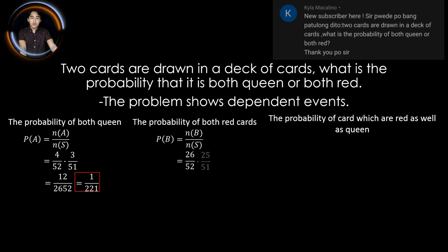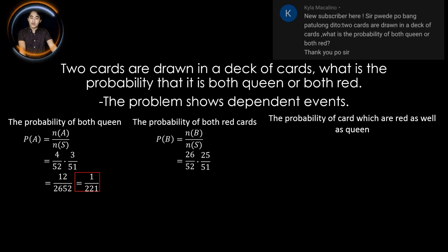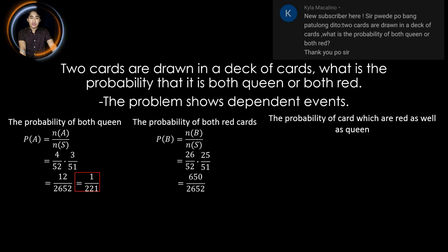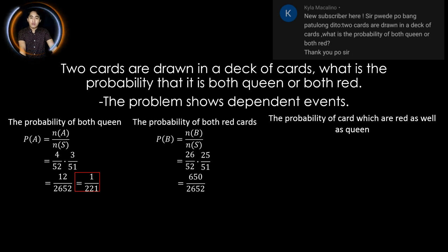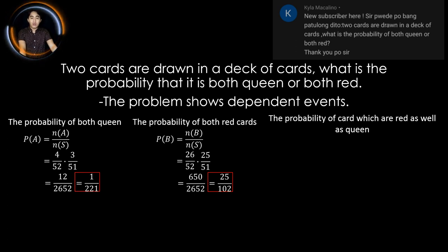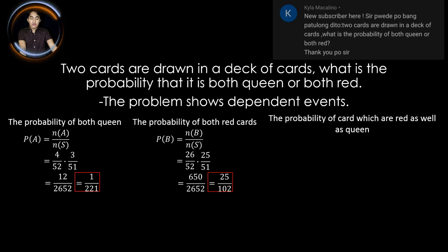For the second draw, we only have 25 over 51, since one card was already taken from the first draw. Multiplying the results: 26 times 25 equals 650, and 52 times 51 is 2,652. Reducing to lowest terms by dividing by 26: 650 divided by 26 is 25, and 2,652 divided by 26 is 102. Therefore, the probability that both cards are red is 25 over 102.